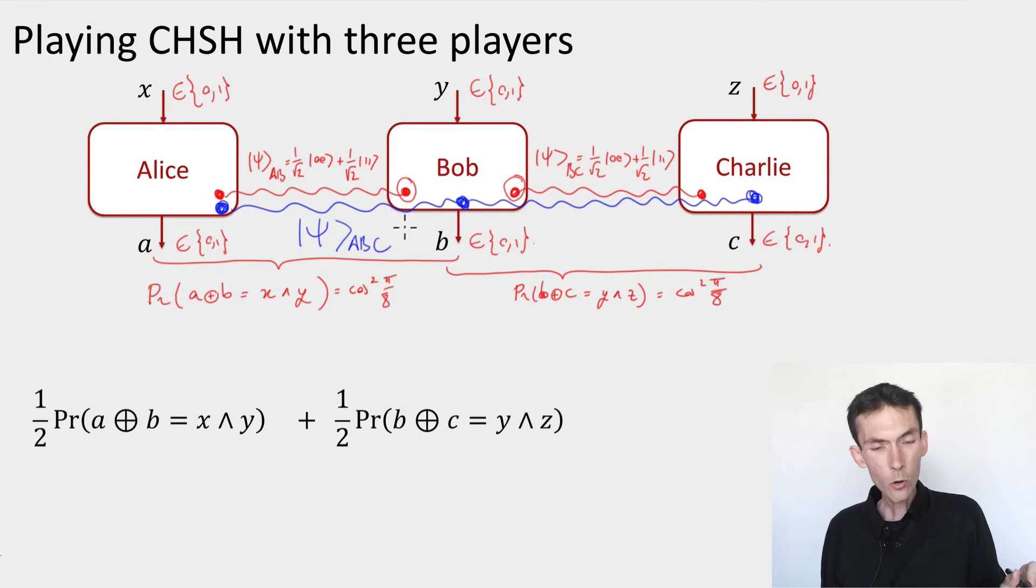such that these outputs would reproduce the same correlations as Alice and Bob if they were just playing the CHSH game on their own, and Bob and Charlie if they were just playing the same game on their own?